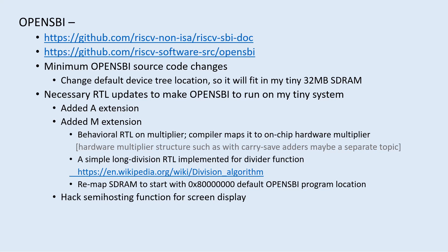I took a shortcut on the multiplier function of the M extension: there are hardware multipliers built in to the FPGA, so I just used a behavioral expression for multiplication and the FPGA compiler maps it to the hardware multipliers.